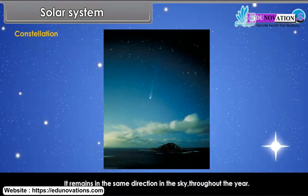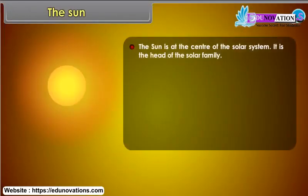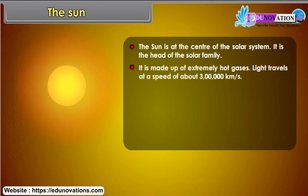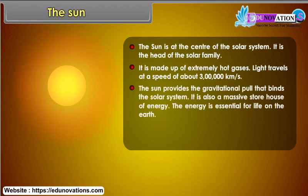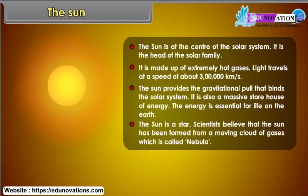The North Star or the Pole Star indicated North because it shines directly above the North Pole, and it remains in the same direction in the sky throughout the year. The Sun is at the center of the solar system and is the head of the solar family. It is made up of extremely hot gases. Light travels at a speed of about 3 lakh kilometers per second. The Sun provides the gravitational pull that binds the solar system and is a massive storehouse of energy essential for life on Earth. Scientists believe the Sun was formed from a moving cloud of gases called a nebula.